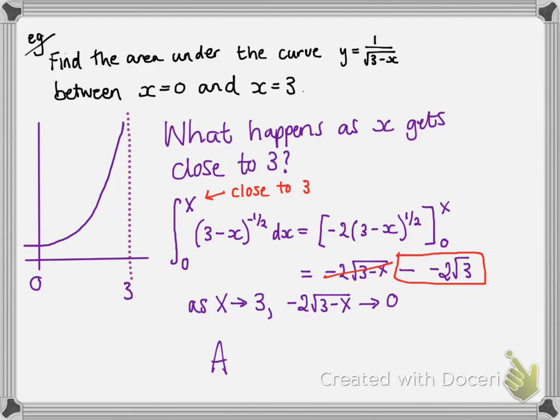So as x tends to 3, we get that first part of our answer getting close to 0. So that first part is not important anymore. As x gets close to that 3 value, that becomes 0. So all we're left with is the -(-2√3), or a positive 2√3. So our area is 2√3.